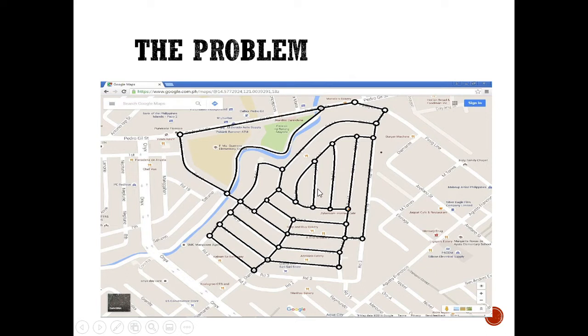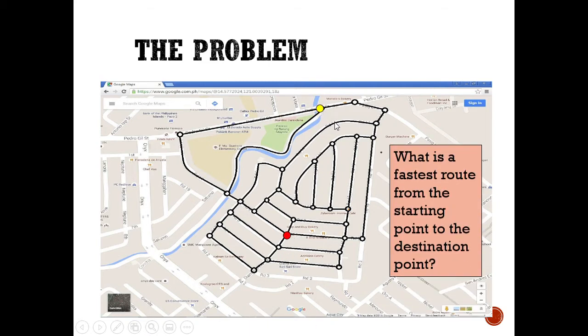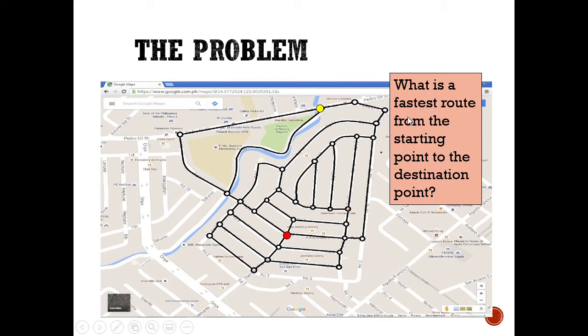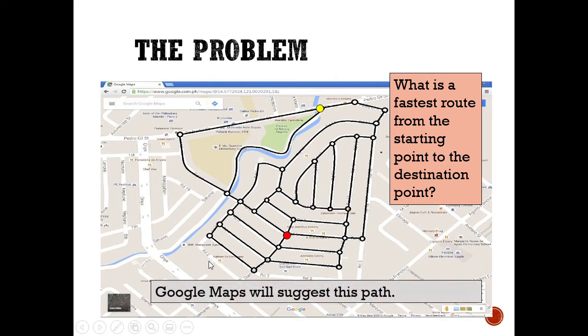So going back to our situation, this is the starting point and this is the destination. The problem is what is the fastest route from the starting point to destination. Now if we will be using some applications such as Google Maps, they will suggest this. So Google Maps will suggest this path.